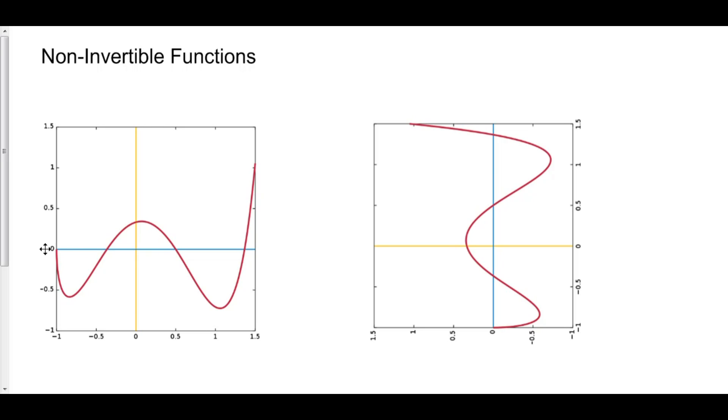You see, because if we wanted to look at what x values give us zero, well, it looks like negative one, about negative 0.5, 0.5, and 1.4.